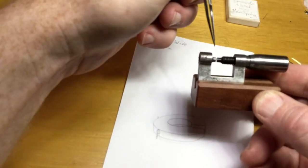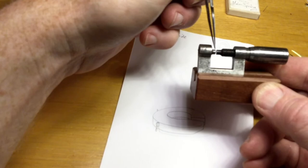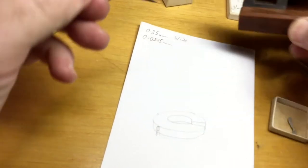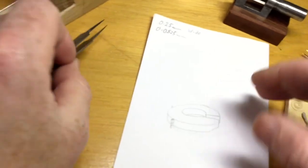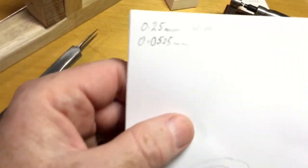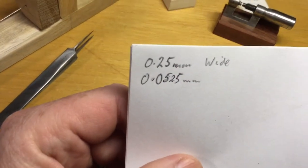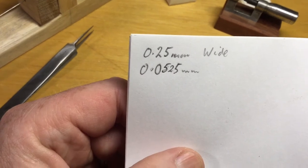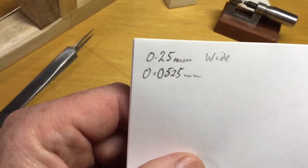Then dip the tail end of the spring between the jaws to find its thickness. So, the final figures were that the spring is a quarter of a millimetre wide by 0.0525 millimetres thick.